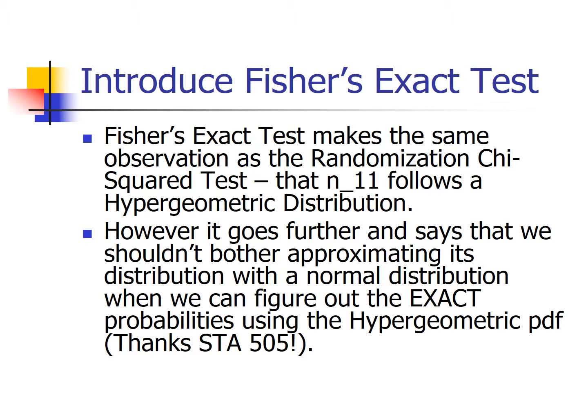Our third test to the rescue: this is why we're going to learn about Fisher's exact test. Fisher's exact test is a spinoff of the randomization test. It uses the same assumptions — row totals fixed, column totals fixed — and observes that N11 follows a hypergeometric distribution. However, it asks: why build a test statistic that is approximately chi-squared when we know N11 follows exactly a hypergeometric distribution, at least under the null hypothesis?